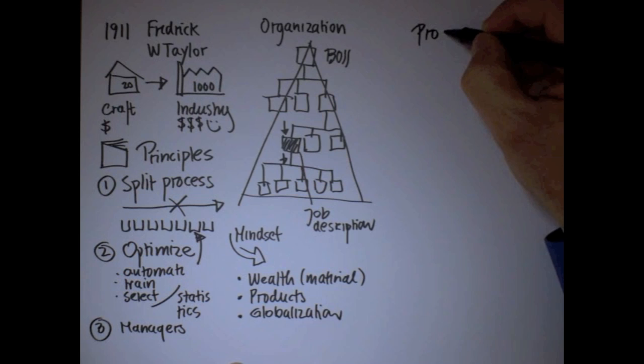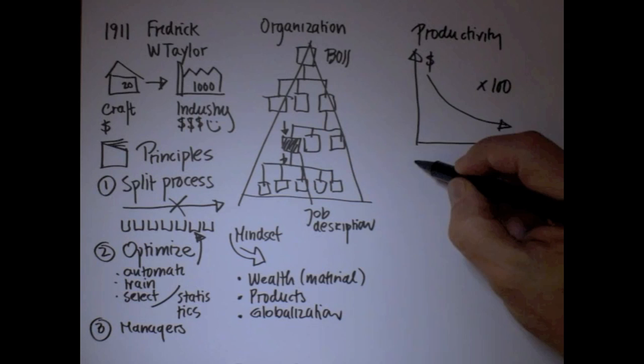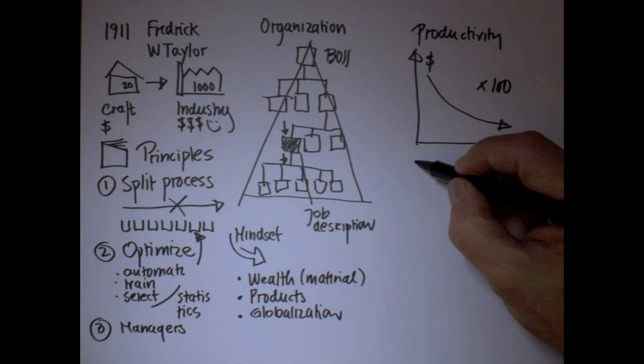Productivity, which is what manufacturing is all about, went up all the time, which means that the cost per unit, actually over 100 years, in many cases, multiplied by 100. This was the essence of mass production.